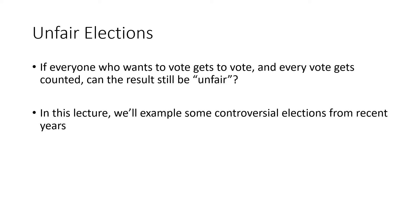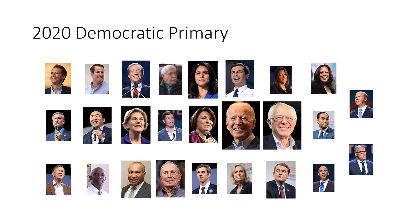One example is the 2020 Democratic primary. Here's a sample of the candidates who ran for the nomination for president from the Democratic Party. One of the reasons why primary elections can be problematic or controversial is because there are so many candidates — someone's favorite candidate, or someone who you might personally think is the best candidate, doesn't ever really get a shot because they're competing against so many other people and never build enough support to end up winning the nomination.